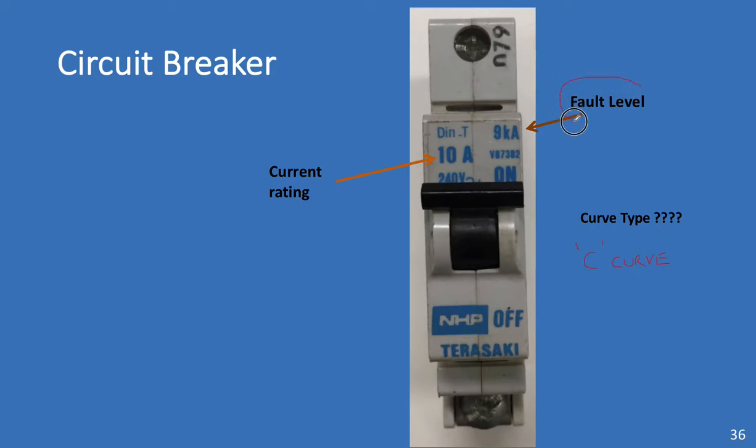Now, the fault level. What this 9,000 amps is telling us is that the electrical and mechanical strength of this circuit breaker is, it will handle 9,000 amps for one second. If you try and put 9,000 amps through it for a second and a half, it will physically fail. It will heat up. It will melt. It will explode, depending on how much above 9,000 amps you go.